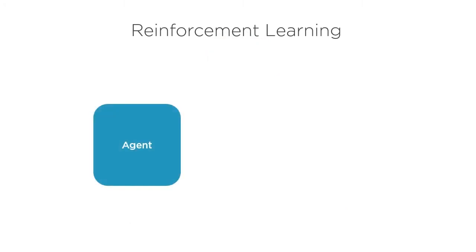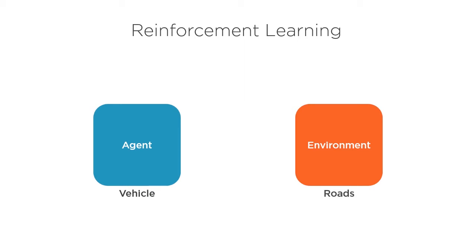It starts with an agent interacting with an environment. The agent is trying to achieve a multi-step goal within the environment. For example, a self-driving car might be trying to drive on the roads in the real world. Its goal is to get you from your home to your office while avoiding obstacles in its path.